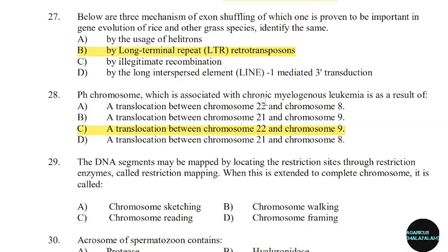29th question: A DNA segment may be mapped by locating the restriction sites through restriction mapping. When this is extended to a complete chromosome, it is called. Correct answer: Option B — Chromosome walking.